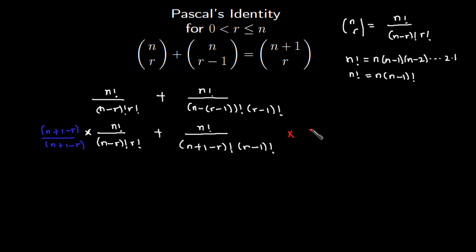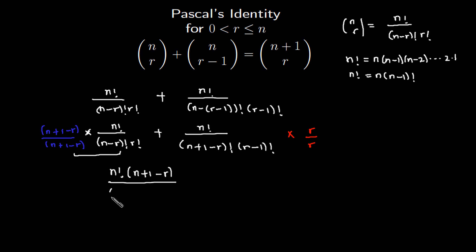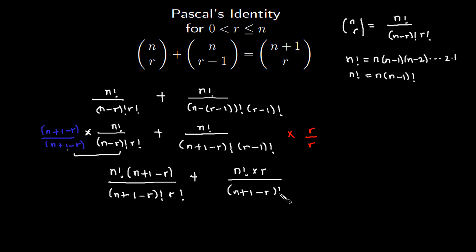We also multiply the second term's numerator by r and divide by r. Applying these, we get n factorial times n plus one minus r divided by n plus one minus r factorial times r factorial, plus n factorial times r divided by n plus one minus r factorial times r minus one factorial — where r times r minus one factorial equals r factorial.